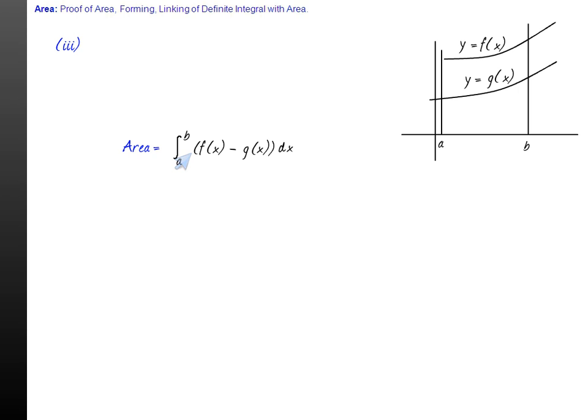The most important thing about this formula is that this holds true in all the cases, whether g(x) lies in the first quadrant or say in the fourth quadrant. Even in this diagram this will be valid. There is no need of taking modulus in this diagram also. This formula holds true because minus g(x) and g(x) is negative so actually area is getting added.